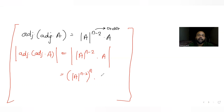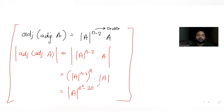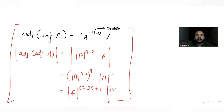Applying this identity: det(adj(adj(A))) = det(A)^(n²−2n+1). Since the bases are the same, the powers add, giving n²−2n+1. This is our formula for det(adj(adj(A))), where n is the order of the matrix.